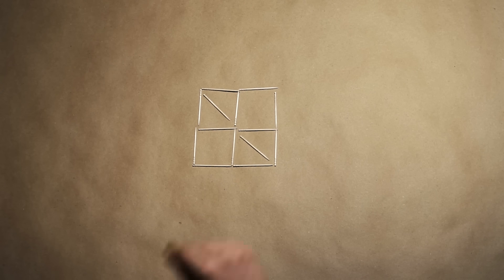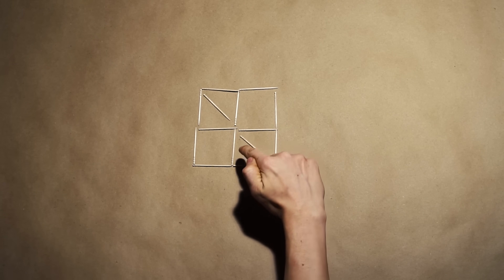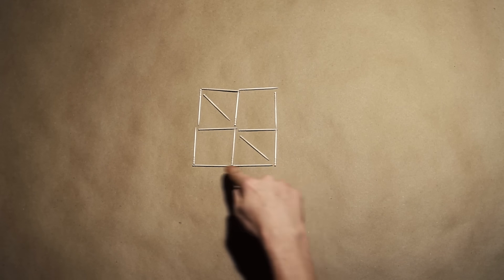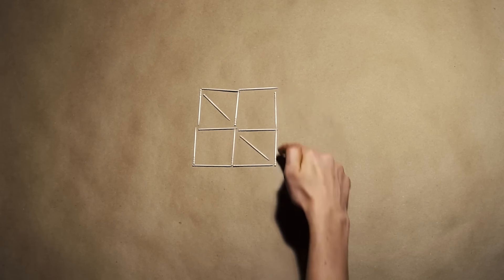And if you still don't get it, here's the six triangles. We got one, two, three, four, five, six.